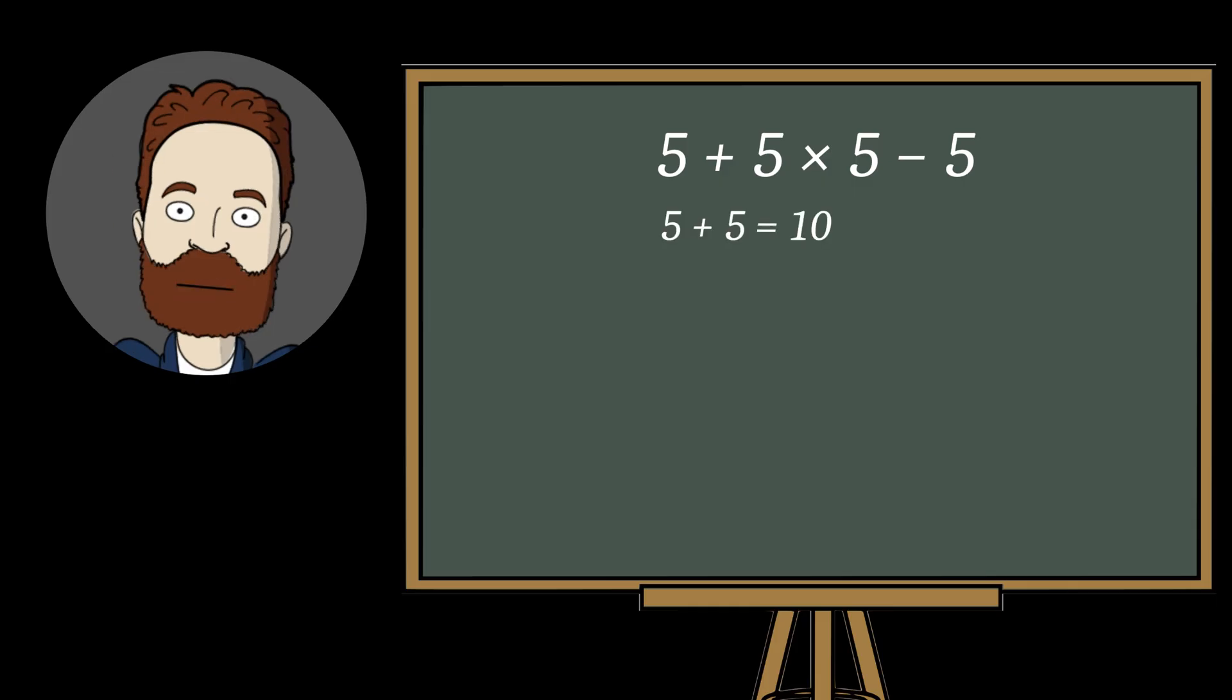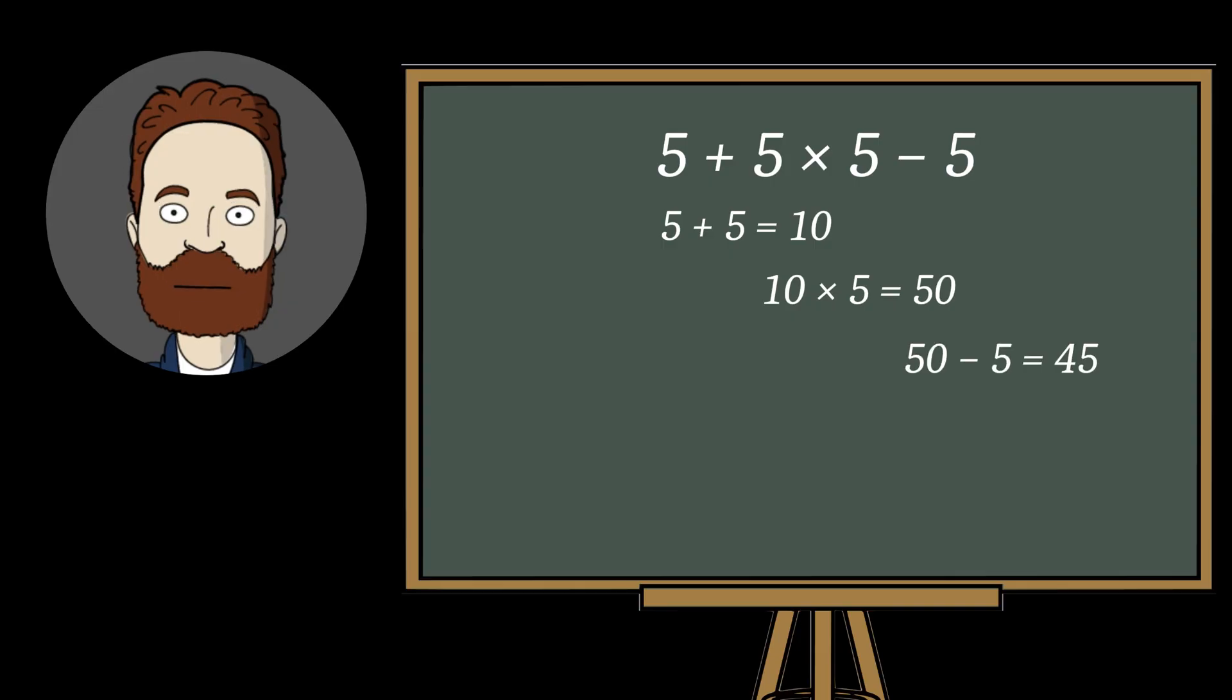First addition, then multiplication, and finally subtraction. At first glance, it seems logical to calculate from left to right, but this violates the order of operations.